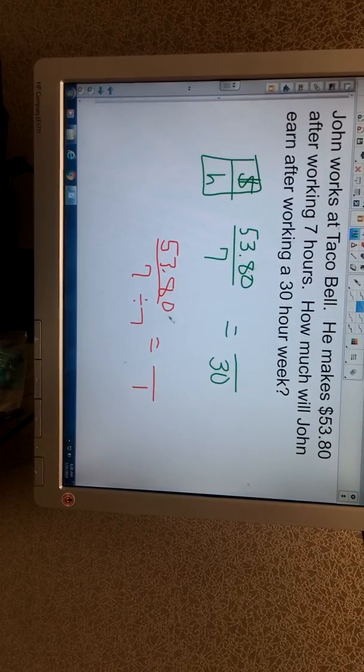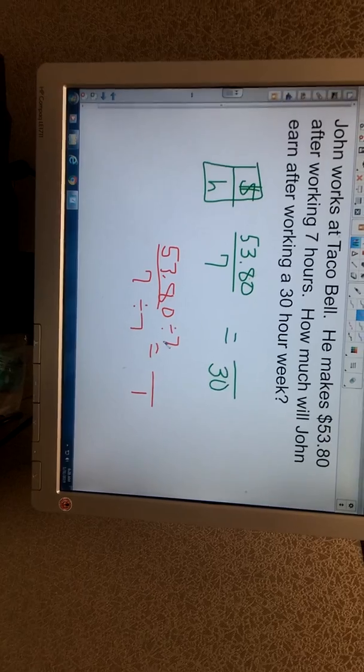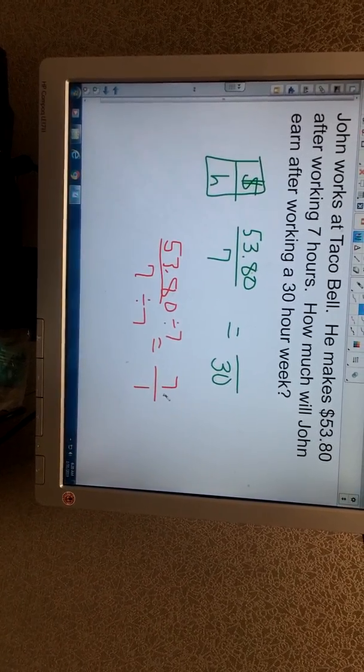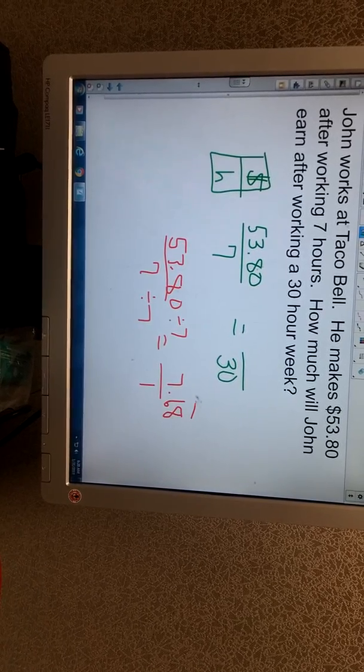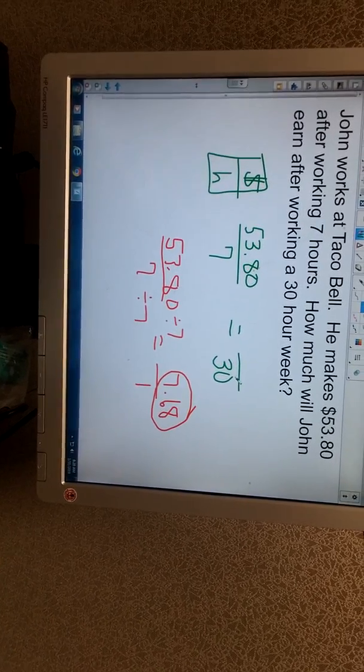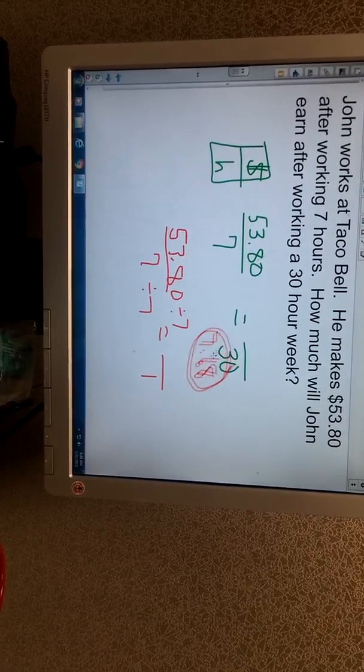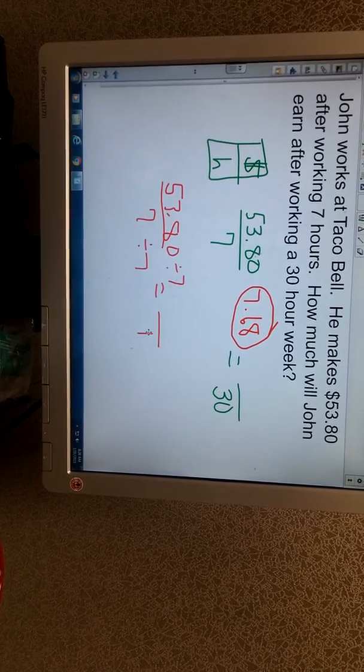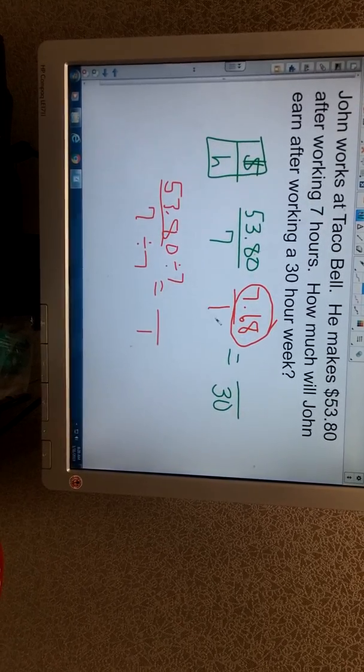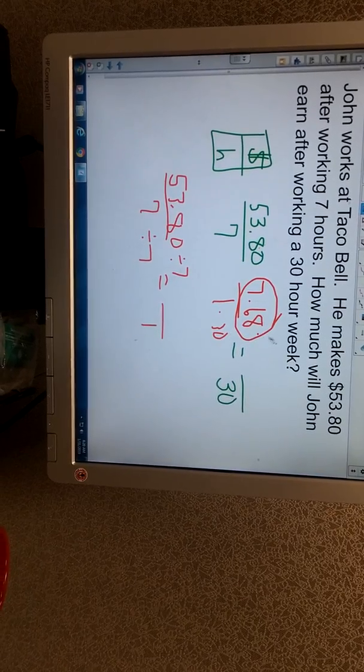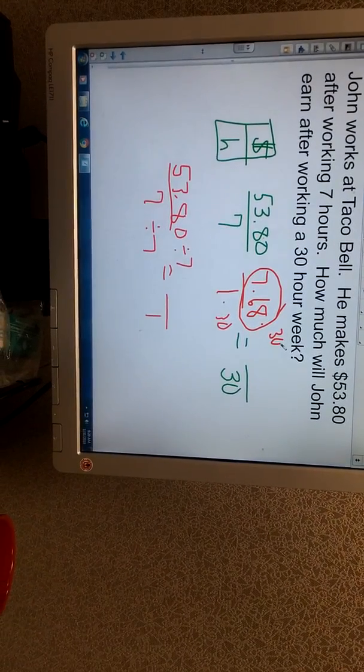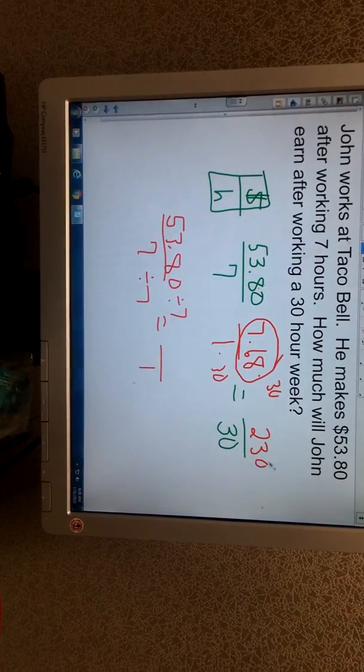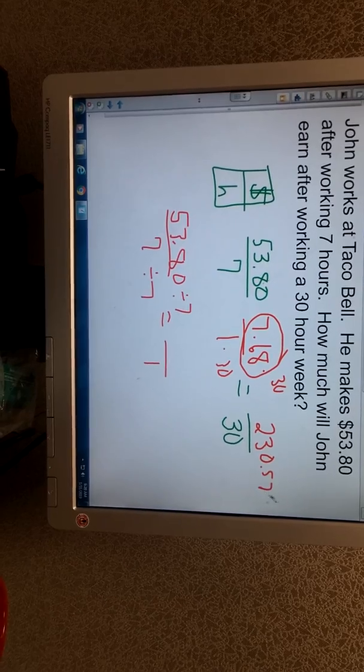7 divided by 7. 53.80 divided by 7. It's going to give you a pretty long string of decimals. But because we're talking about money, I'm going to call it $7.68. You could have called it $7.69. And we know then, if this is how much he makes for one hour, we can multiply that by 30 to get his total that he'll earn after working that entire week. So, he's going to earn about $230 and 50 some cents.